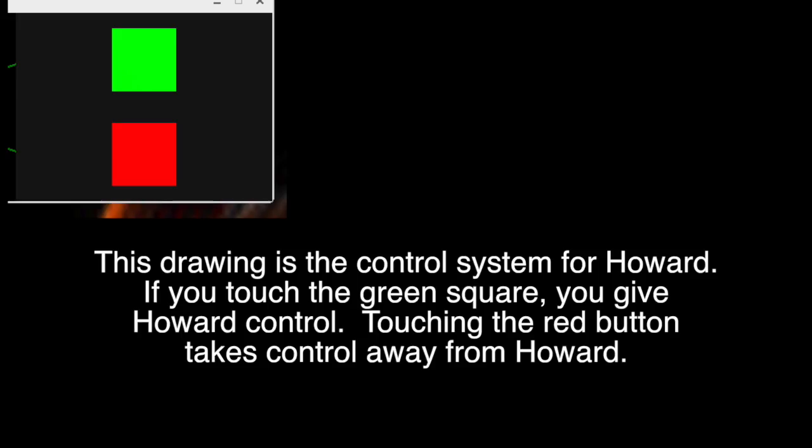This drawing is the control system for Howard. If you touch the green square, you give Howard control. Touching the red button takes control away from Howard.